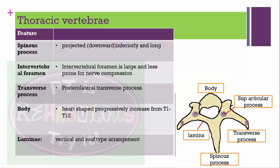The thoracic vertebra is made up of spinous process, intervertebral foramen, transverse process, body, and lamina. The transverse process is directed downward and inferiorly and is very long. The intervertebral foramen is large and less prone to nerve compression. The body is heart-shaped and progressively increases from T1 to T12. The lamina has a vertical roof-type arrangement.